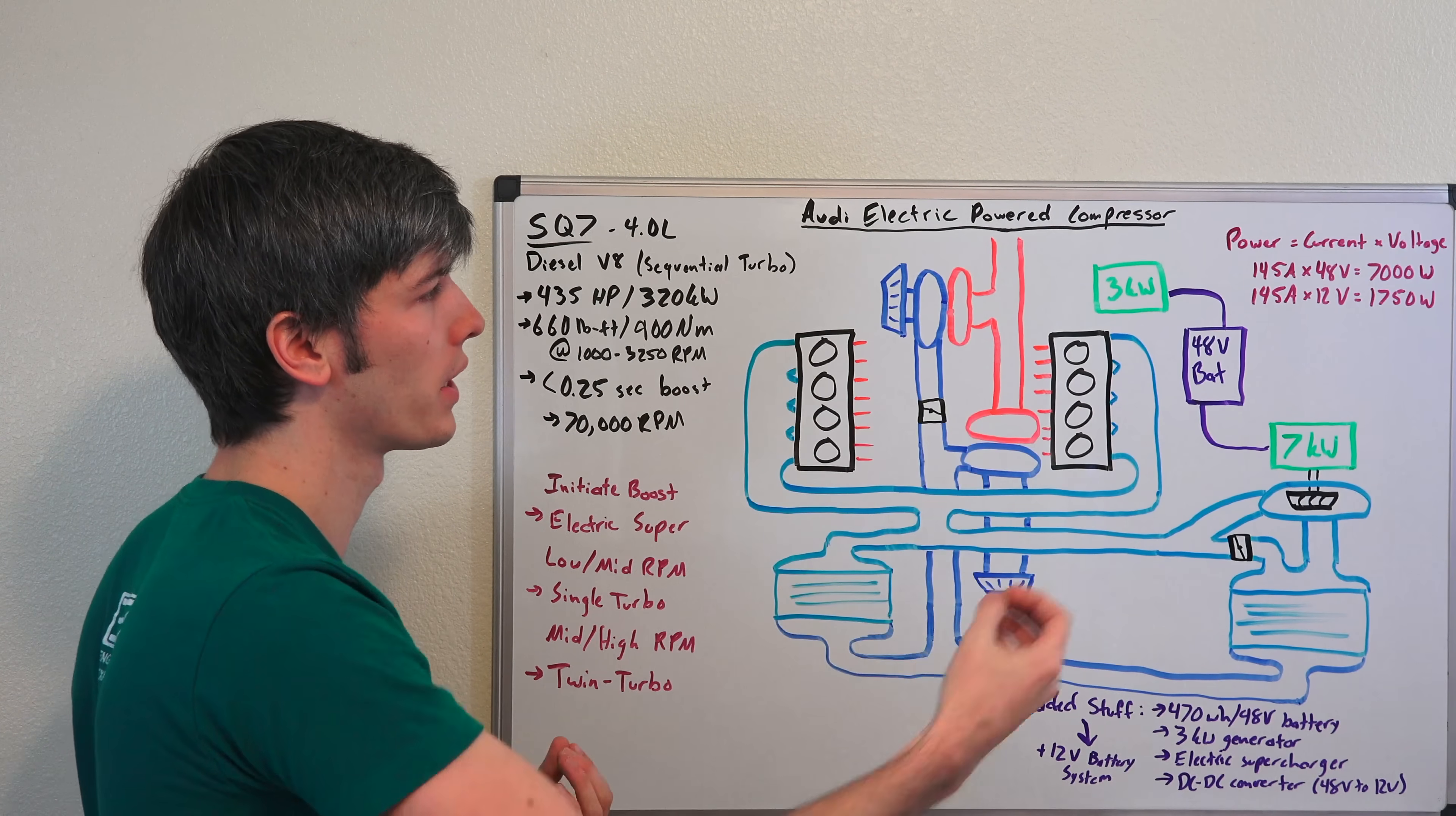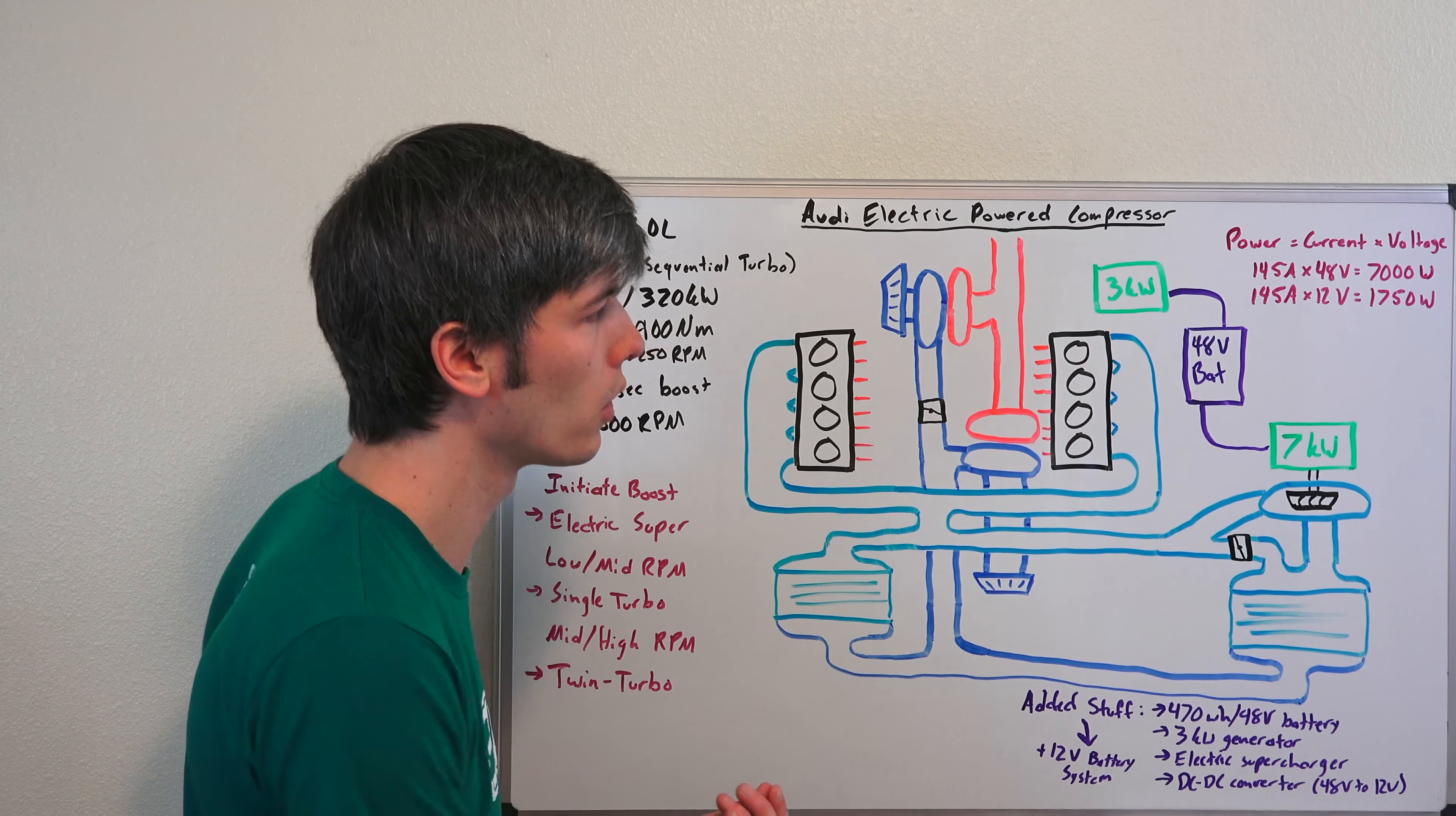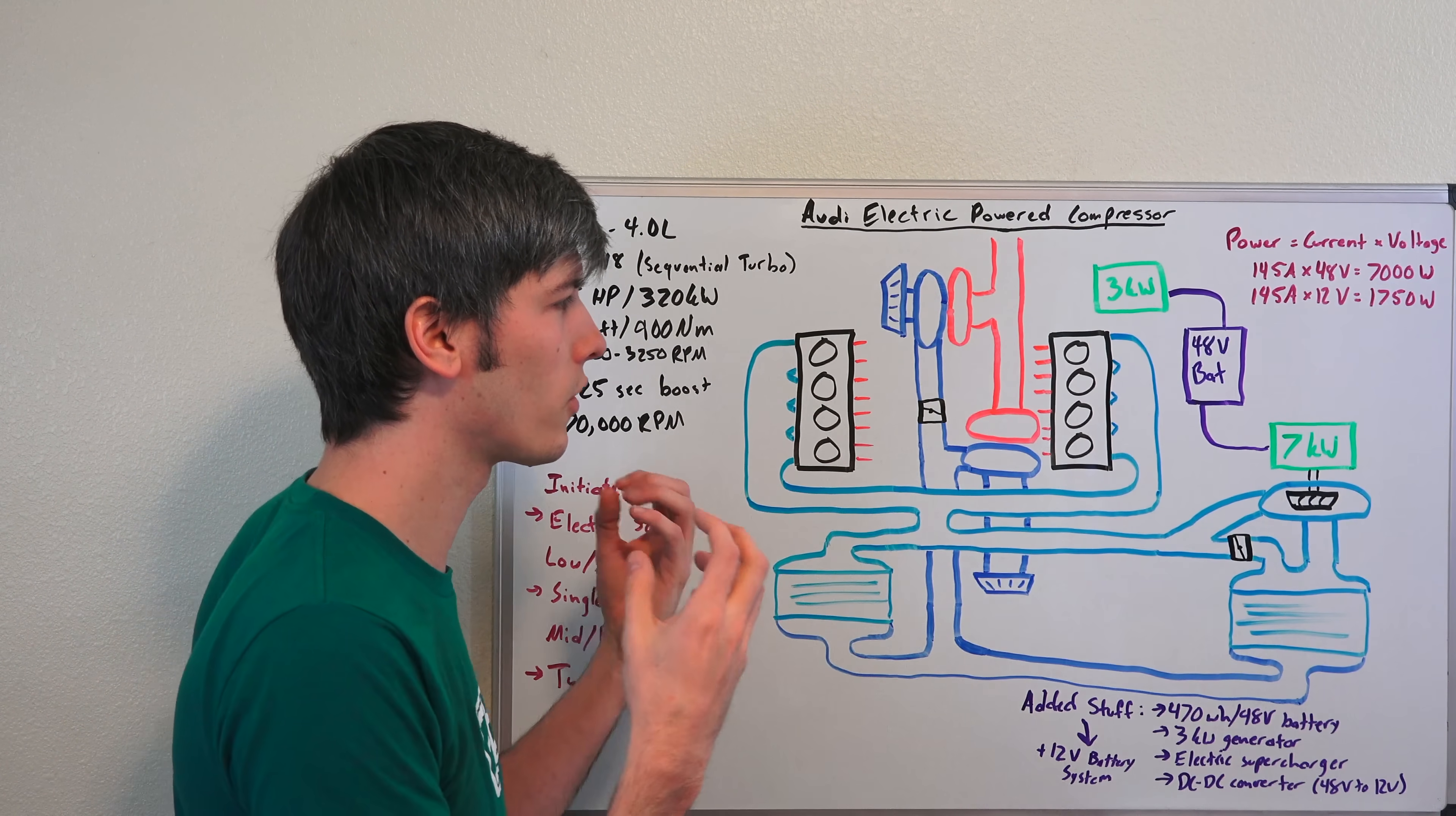So the reason Audi put in a 48 volt system is to be able to power this 7 kilowatt motor. You need a significant amount of power to pull in a lot of air and to do that very quickly. So power is equal to current multiplied by voltage. So if you have 145 amps, you multiply that by 48 volts, which is what this battery delivers, and that gives you 7 kilowatts or 7,000 watts, about 9.5 horsepower. If you're using a 12 volt system, you've got 145 amps multiplied by 12 volts, you're only producing 1.75 kilowatts. This is a huge demand.